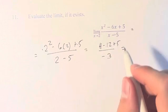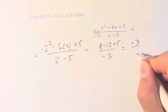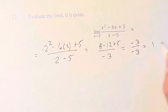4 minus 12 plus 5 is equal to negative 3. So we have negative 3 divided by negative 3, which is 1. So the value of this limit is equal to 1.